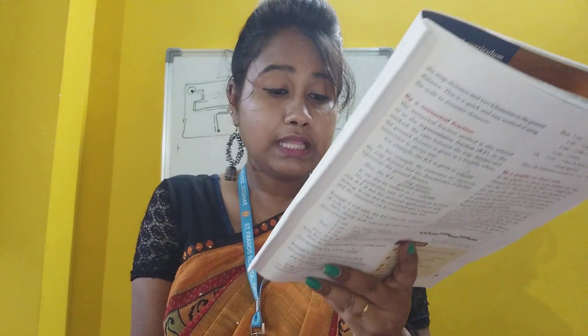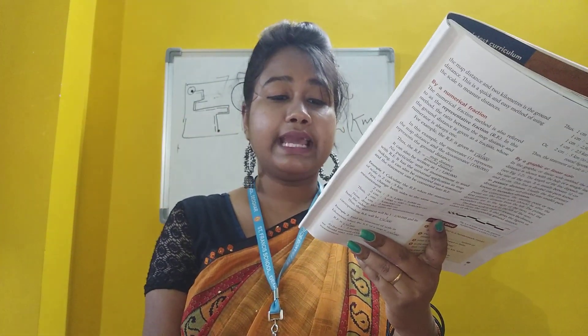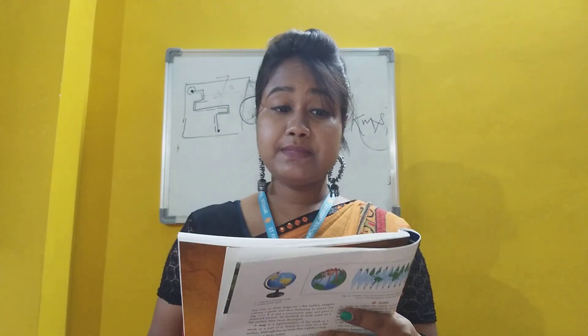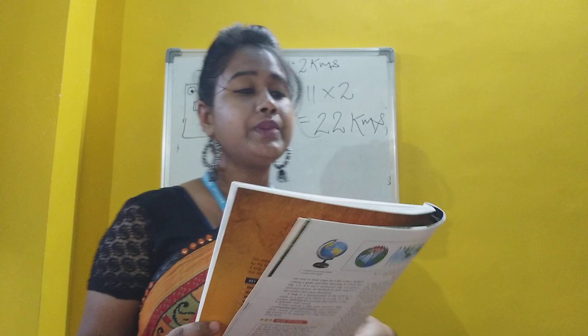The scale of the map can be shown in one or more of the following ways: by a statement, by a numerical fraction, or by a graphic or linear scale. In the statement method, the scale is stated as '1 cm is equal to 2 km.' In this statement, 1 cm is the map distance and 2 km is the ground distance. This is a quick and easy method of using the scale to measure distances.